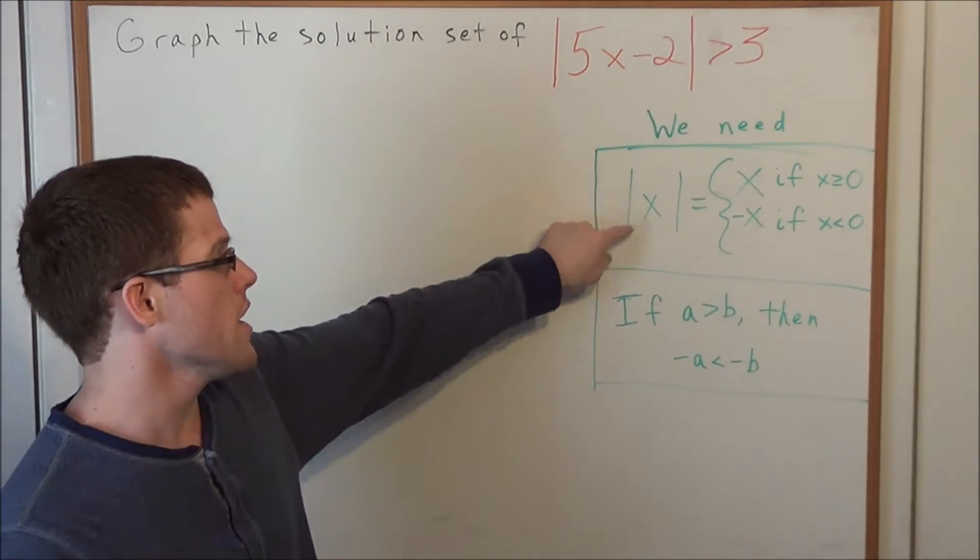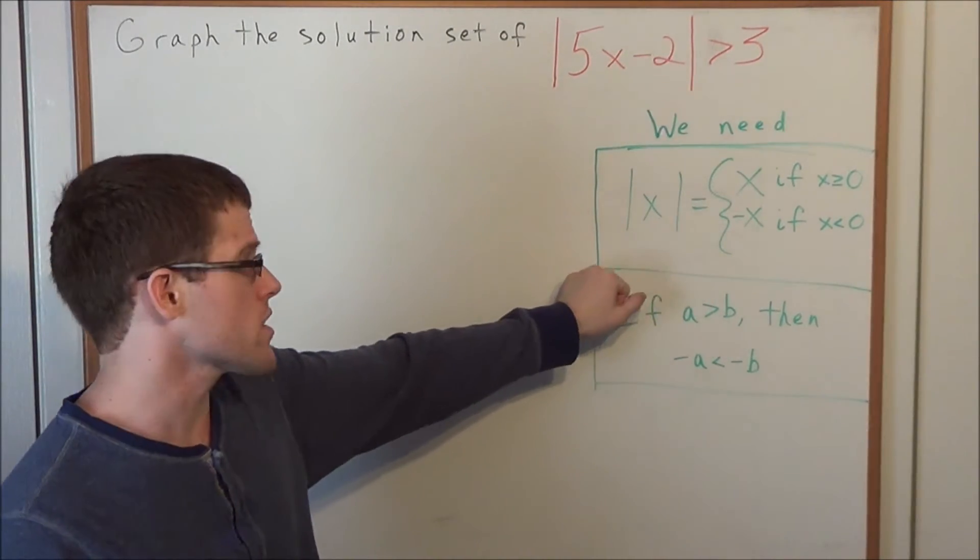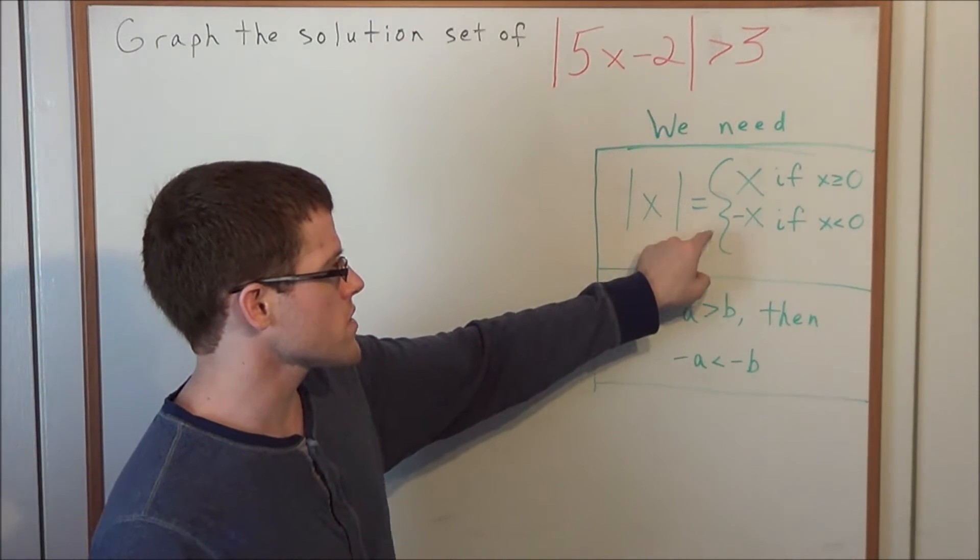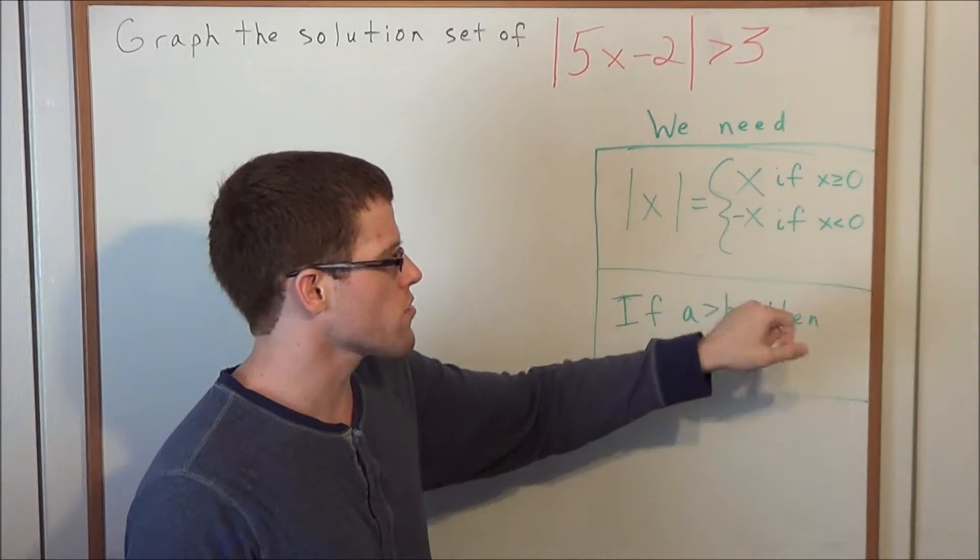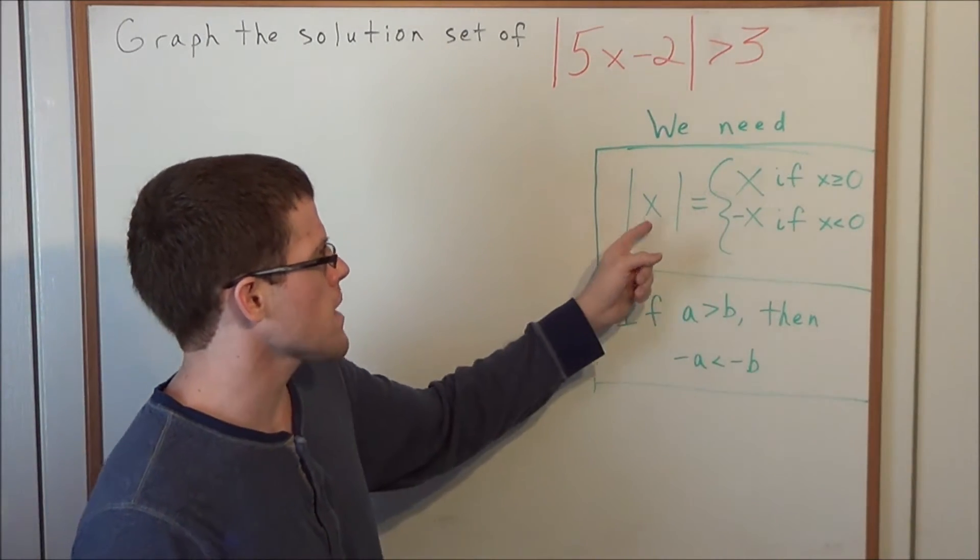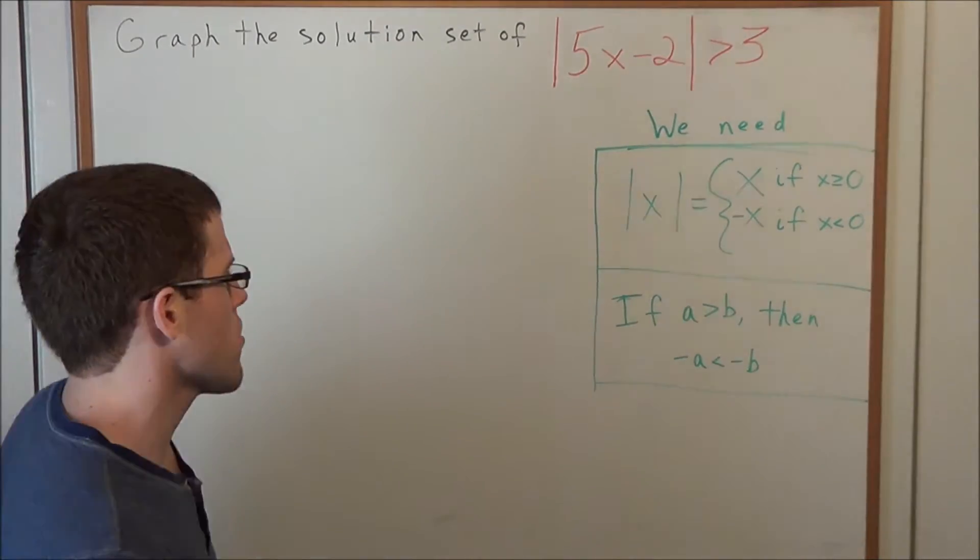Now before we get started, we're going to need the definition of absolute value of x. We have that the absolute value of x is equal to x if x is greater than or equal to 0, and the absolute value of x is equal to negative x if x is less than 0.